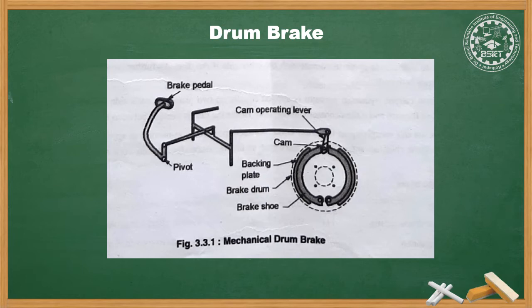The drum encloses the complete brake mechanism and protects it from moisture and dust. The inner side of the drum is open. The backing plate at the open side of the brake drum completes the brake enclosure and holds the brake assembly. The backing plate is attached to the vehicle axle housing and acts as a base for fastening the brake shoe and operating cam mechanism with its linkage.